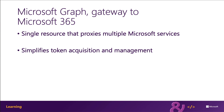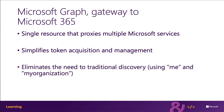Microsoft Graph also enables easy navigation of entities and the relationships between them. While there are many different Microsoft 365 services such as OneDrive for Business or Outlook for Contacts and Calendars, these entities are related to each other within Microsoft Graph, making it easy to navigate from one entity to another even across different underlying endpoints.